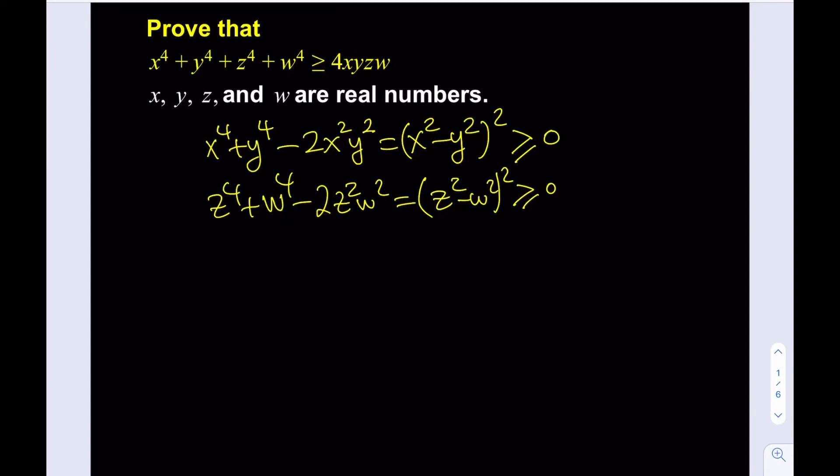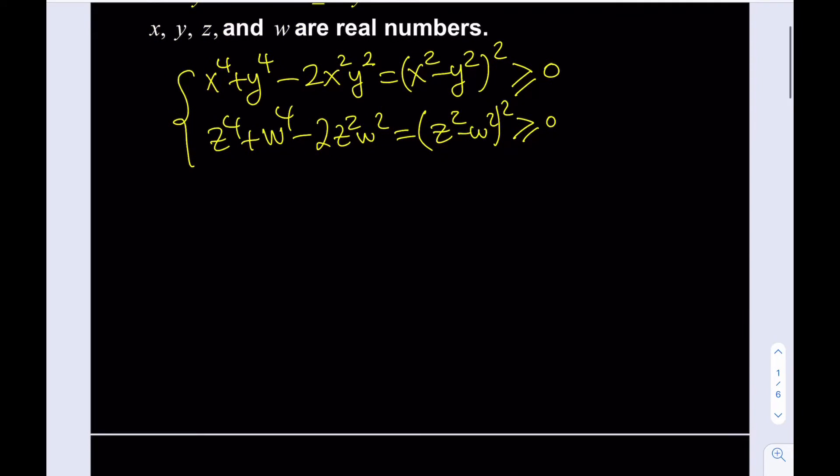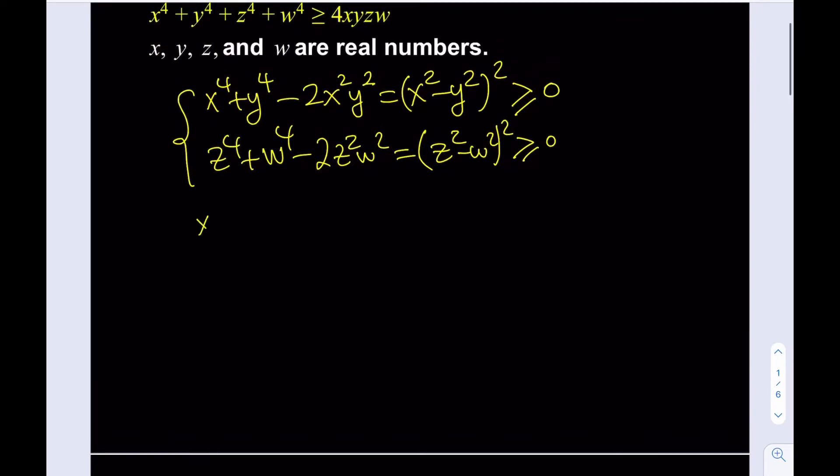Now what's good about this is that I can just take these two and forget about the middleman here. So I can write this as x to the fourth plus y to the fourth is greater than or equal to 2x squared y squared. And the same thing goes for the second one. So we'll be getting a nice identity here.